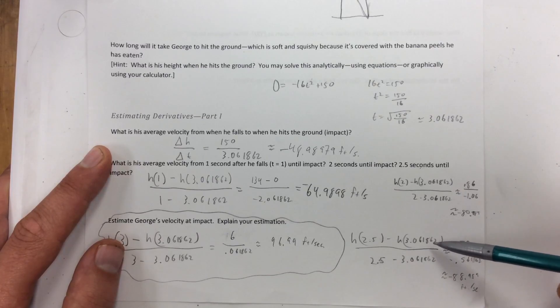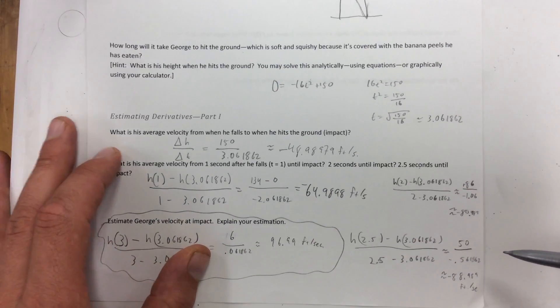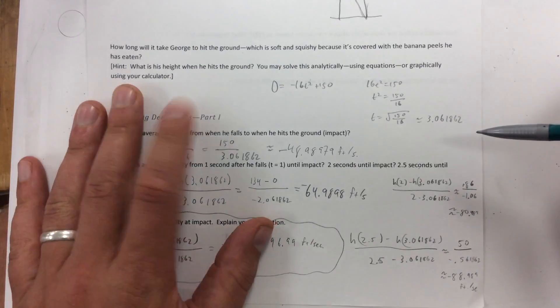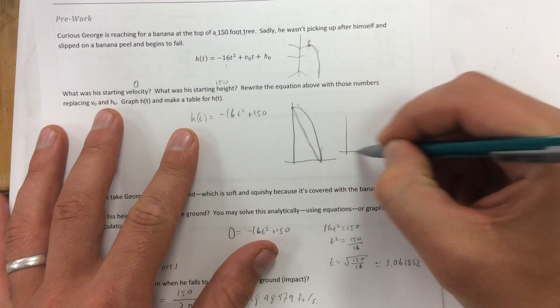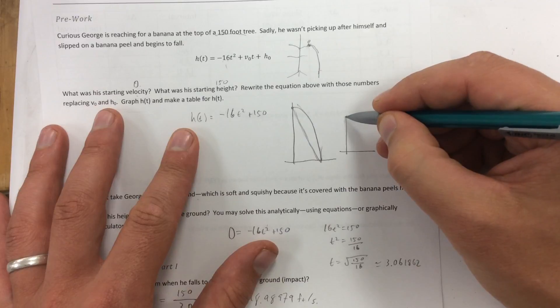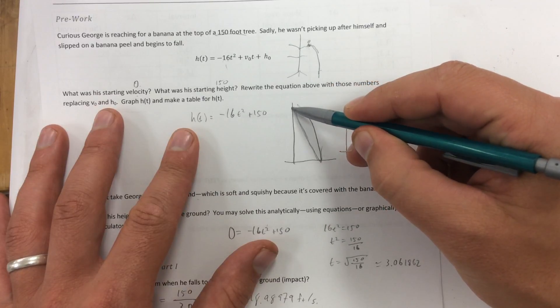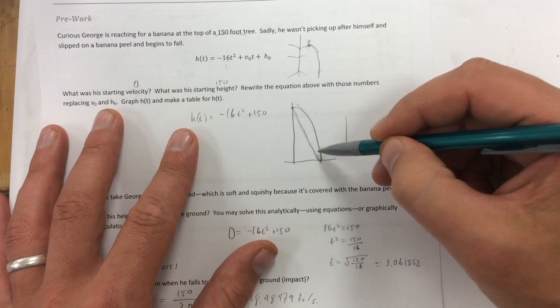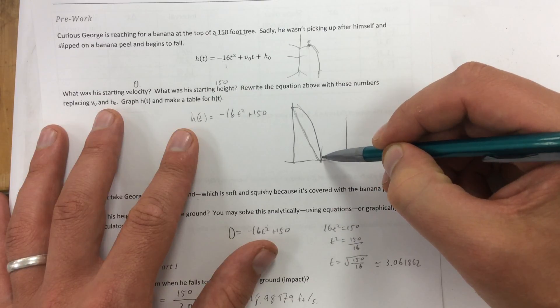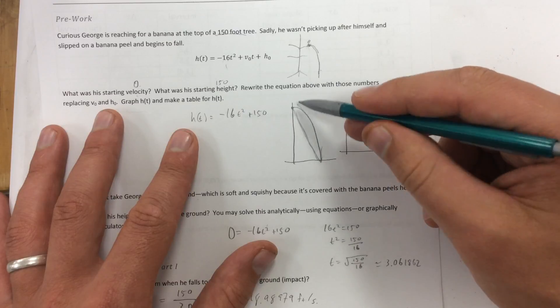If I use 2.5 seconds, I get negative 88.989 feet per second. And what we're doing here is, we found the average velocity from when he fell down, the starting time till he hit. We found the slope of that line right there.